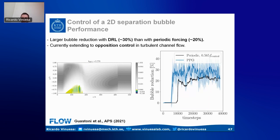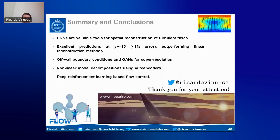To recap: I told you about predictions using CNNs and GANs, about model reduction using autoencoders in a non-linear way, and deep reinforcement learning for flow control — all very promising approaches. Thank you very much for your attention. Now I will take your questions.